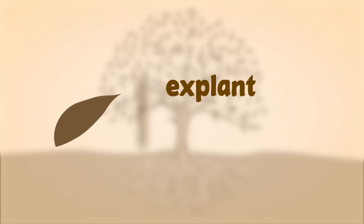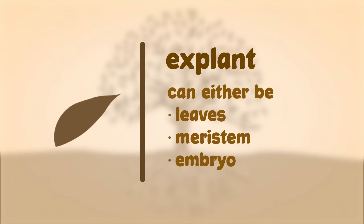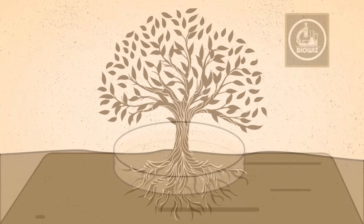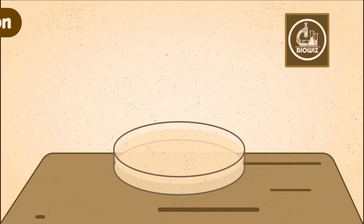To perform the process, a part of a plant containing living cells — say, a leaf — is collected. This collected part is called the explant. The explant as it is contains non-dividing cells and cannot be directly used.